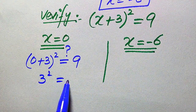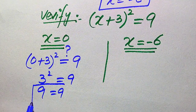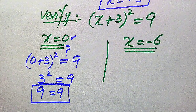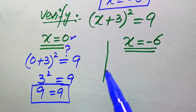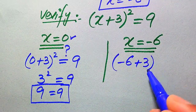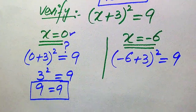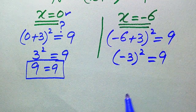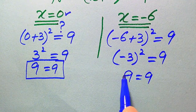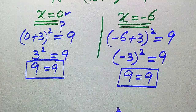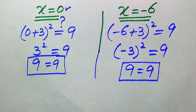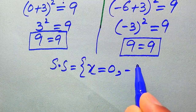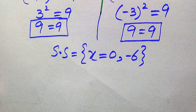So 0 + 3 = 3, and 3² = 9, so 9 = 9. This shows both sides are equal, meaning x = 0 satisfies the equation. Now for x = −6: (−6 + 3)² = 9, and −6 + 3 = −3, so (−3)² = 9, giving 9 = 9. This also shows both sides are equal, so x = −6 also satisfies the equation. The solution set is x = 0 and x = −6.